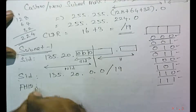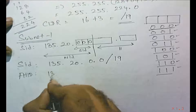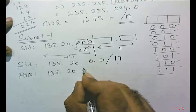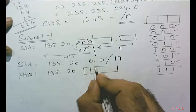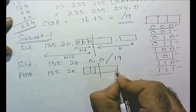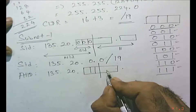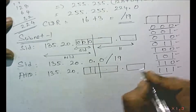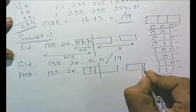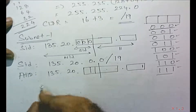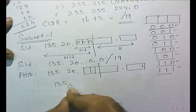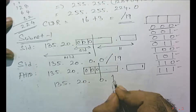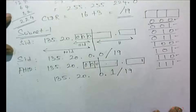The first host ID: there is no change up to the second octet, so it remains 135.20. In the third octet we borrowed 3 bits, leaving 5 remaining bits, plus 8 bits in the fourth octet. The formula for first host ID is to make the last bit in the host part 1. So the first host ID is 135.20.0.1/19.